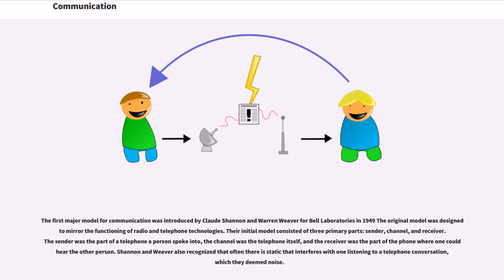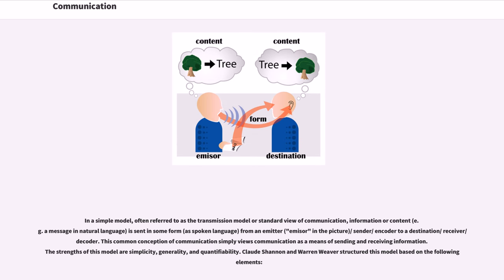In a simple model, often referred to as the transmission model or standard view of communication, information or content (for example, a message in natural language) is sent in some form as spoken language from an emitter/emissor (in the picture sender/encoder) to a destination/receiver/decoder. This common conception of communication simply views communication as a means of sending and receiving information. The strengths of this model are simplicity, generality, and quantifiability. Claude Shannon and Warren Weaver structured this model based on the following elements. Shannon and Weaver argued that there were three levels of problems for communication within this theory.